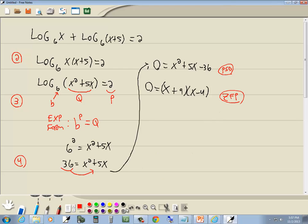Zero factor property. It says you get 0 on one side, you factor the other side, you're going to set each factor equal to 0. So I'll set x plus 9 equal to 0, and I'll set x minus 4 equal to 0. And then solve those, and we get x equals negative 9, and x equals 4.